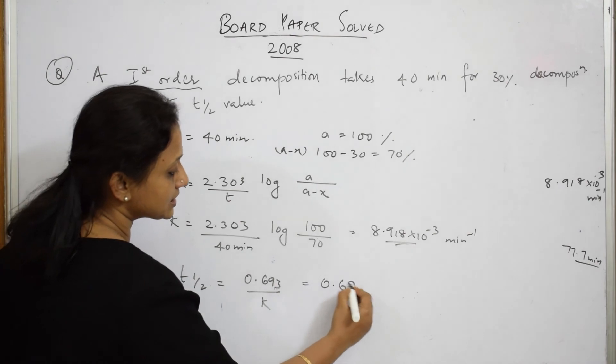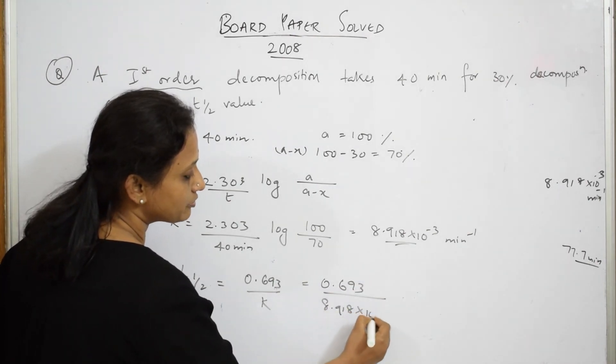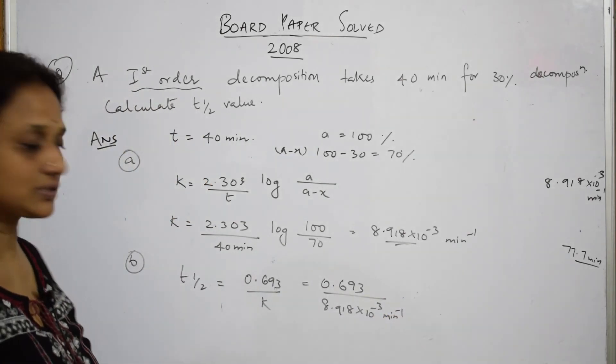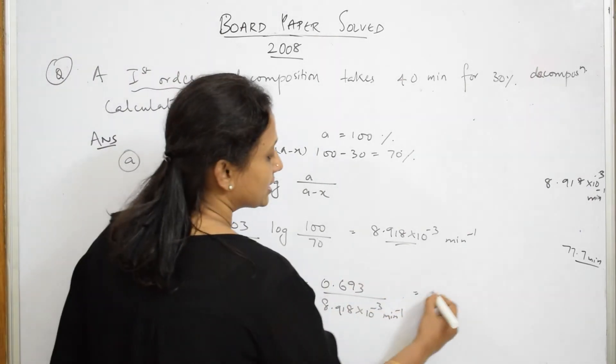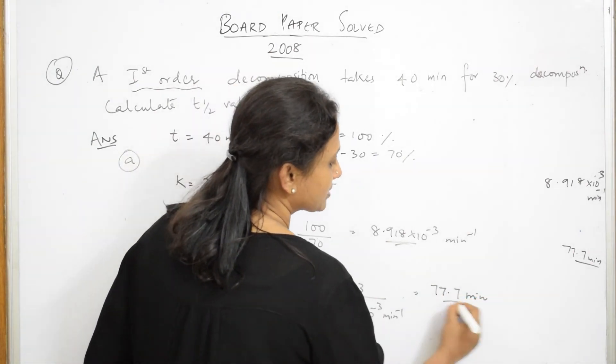What do we get? 0.693 by 8.918 into 10 base power of minus 3 minute inverse. That is the unit for your first order rate constant. When you solve this, you get an answer of 77.7 minutes. This is your half-life period.